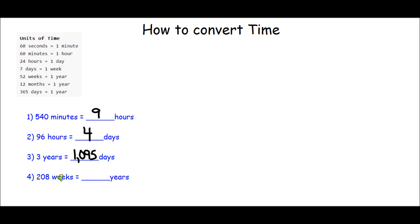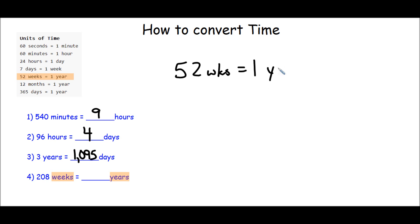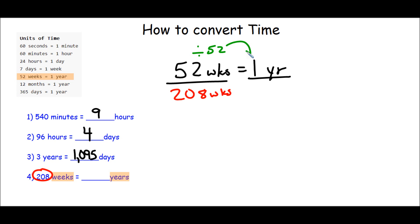Last problem. We're looking to see how many years there are in 208 weeks. We're looking for a relationship between weeks and years. I see in my chart that there are 52 weeks in 1 year, so I'm going to write that down: 52 weeks equals 1 year. Draw my line under those and plug in what I know from the problem — I know there are 208 weeks. Now I ask myself, what happened to the 52 to turn into a 1? I divide it by itself, so what I do to the top I do to the bottom. 208 divided by 52 will give me my answer.